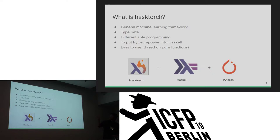What is HasTorch? HasTorch is a general machine learning framework. It is type-safe and written in Haskell. It supports differentiable programming. We think ease of use is important, so the high-level APIs are pure functions.